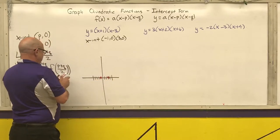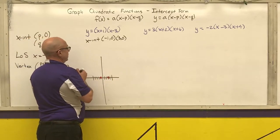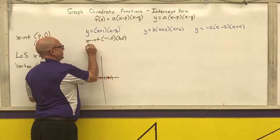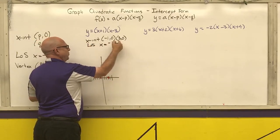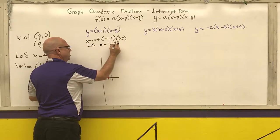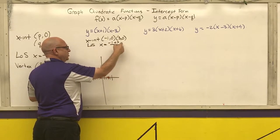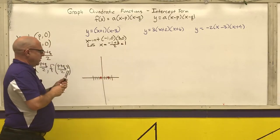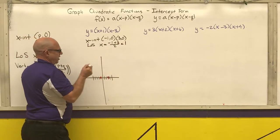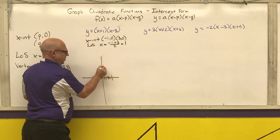Then I want my line of symmetry. My line of symmetry is x equals negative 1 plus 3 over 2. Negative 1 plus 3 is 2. 2 over 2 is 1. Your line of symmetry is halfway between those two numbers.